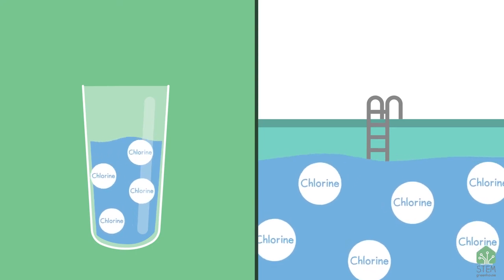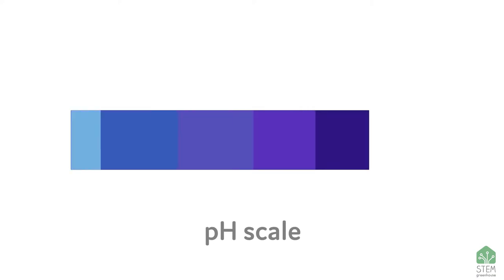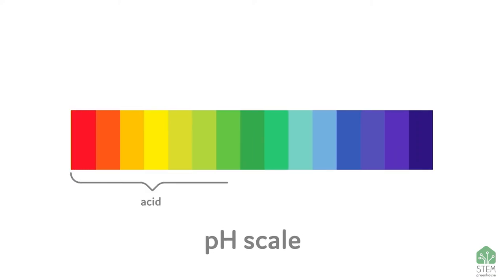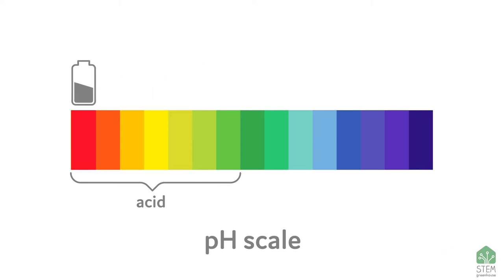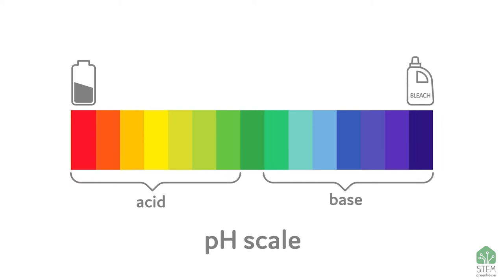That brings us to the next test — pH, which is a scale that measures acidity. Chemicals that are high in acid are in things like batteries. The opposite of acids are bases, and those can be dangerous too. Bleach is an example of a strong base. Pure water is neutral — it is not acidic or basic — but weak acids and bases are normal in nature. Even rain water is slightly acidic.